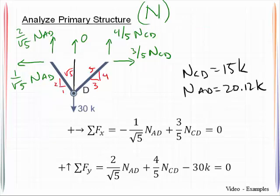In a similar fashion, the bar forces for the primary structure, that capital N, may be found. The only thing really to note here is that the force in that vertical member, the one that we cut, is going to be 0 just by virtue of it having been cut. So n CD is 15 kips and AD is 20.12 kips.